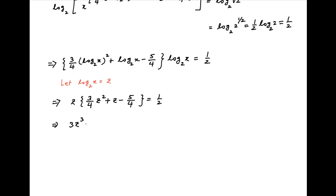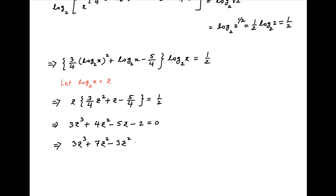Multiplying both sides by 4 and moving all terms to the left hand side, we get 3z cubed plus 4z squared minus 5z minus 2 is equal to 0. Notice that z equals 1 satisfies this equation. Now let's rearrange this equation as 3z cubed plus 7z squared minus 3z squared minus 7z plus 2z minus 2 is equal to 0.